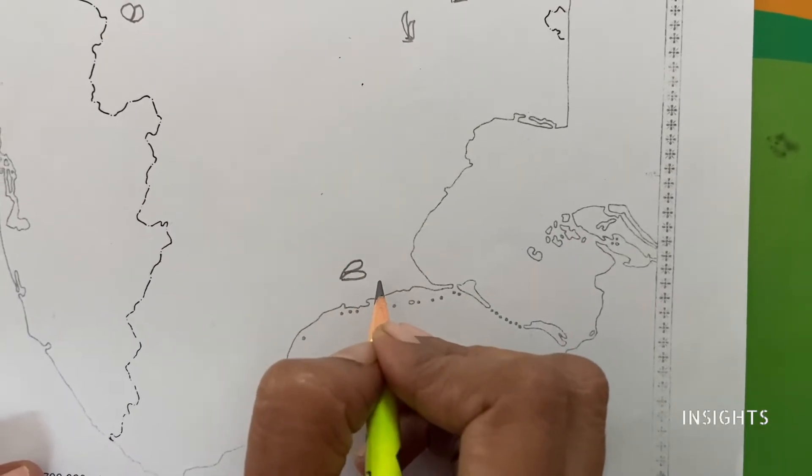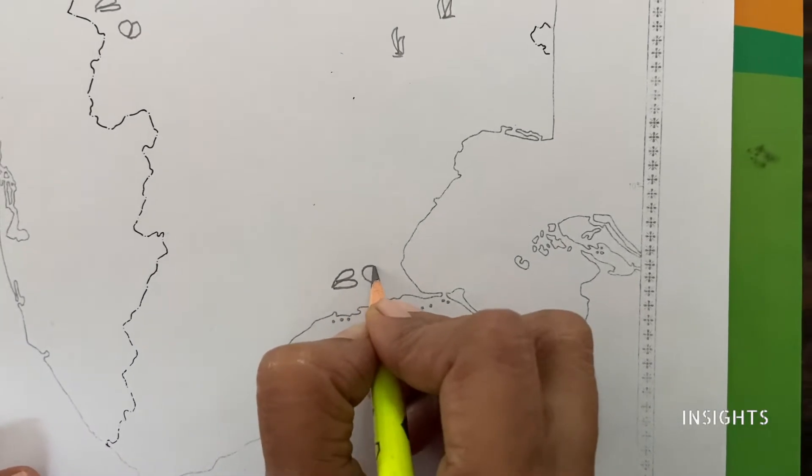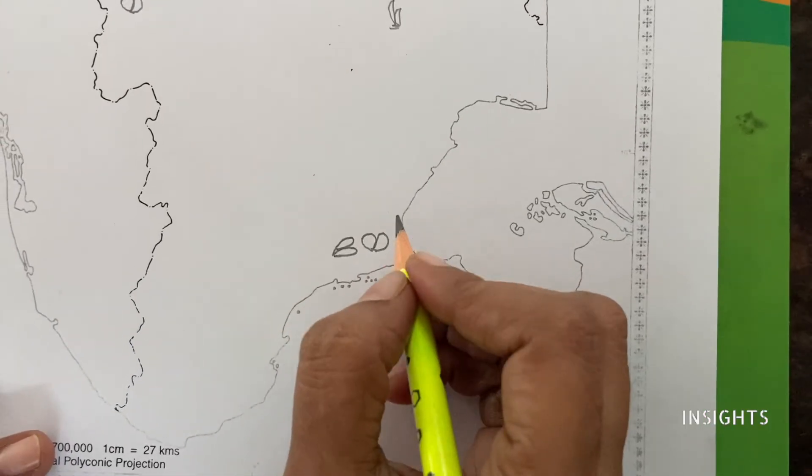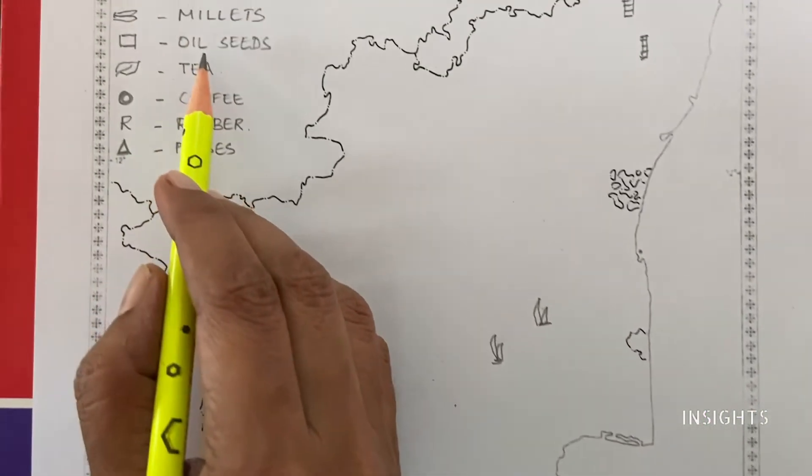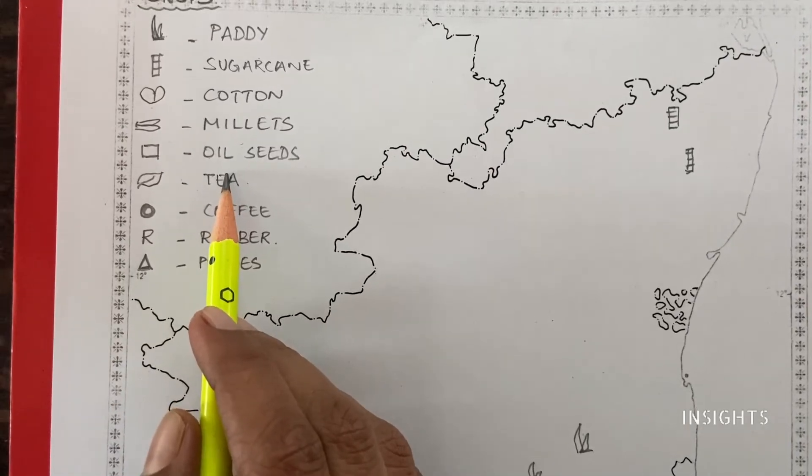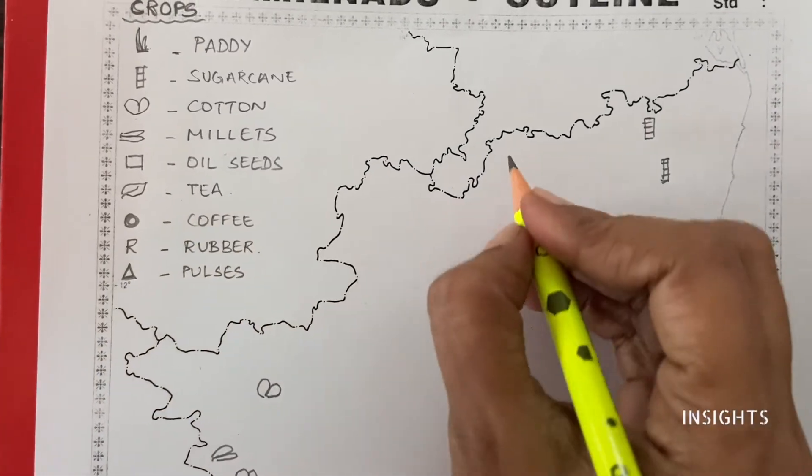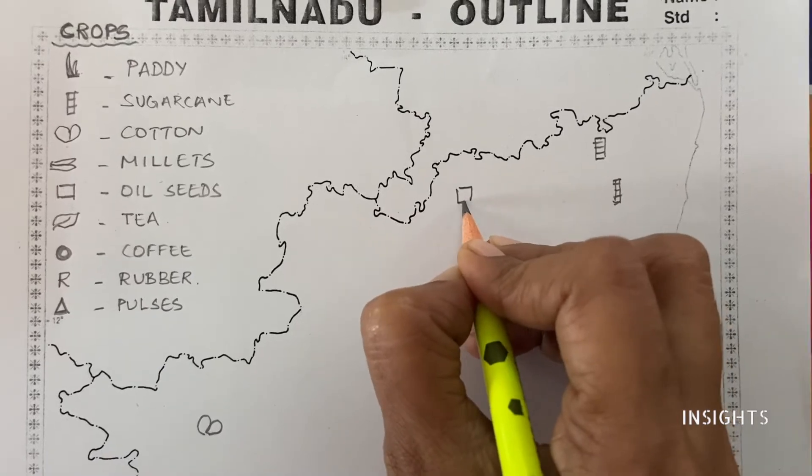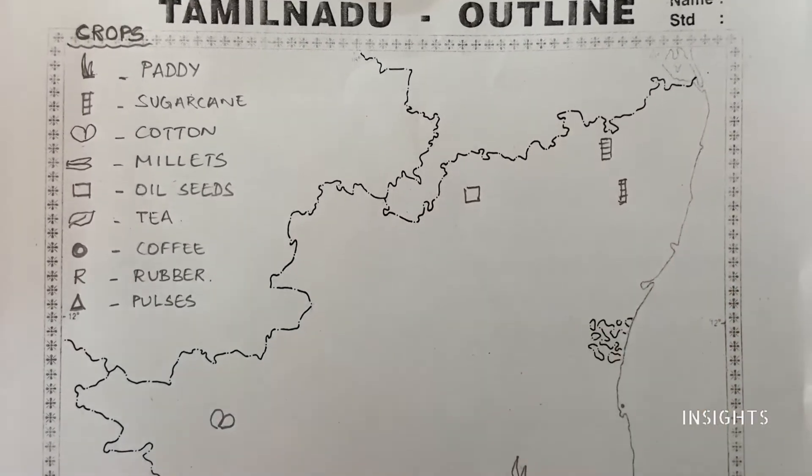Actually, cotton is also available here. Next, in the area, it's not millets, it is oil seeds. Oil seeds again, it is found here and Coimbatore area again.